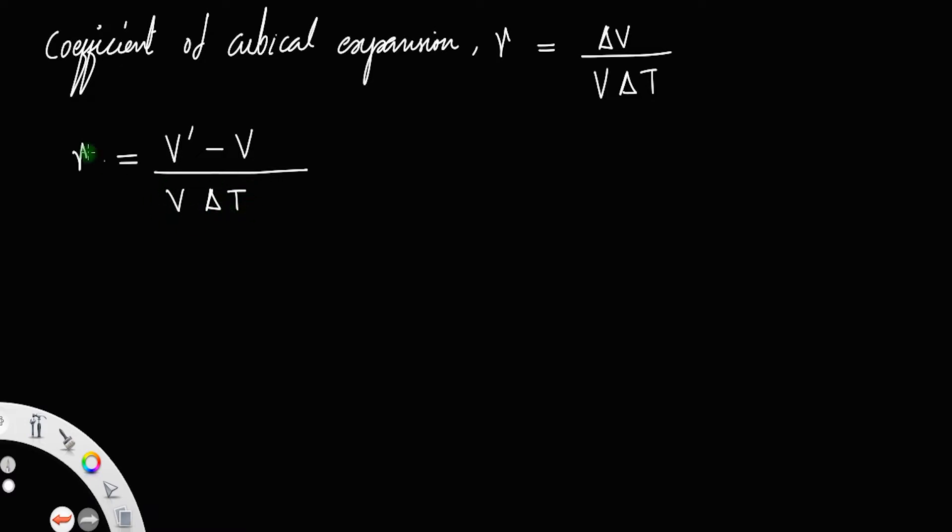Let us take this term to the left. So gamma V delta T is equal to V dash minus V, or V dash minus V is equal to gamma V delta T.